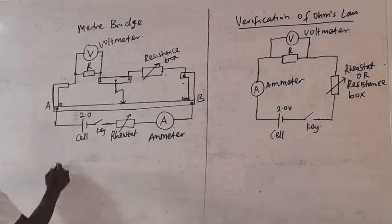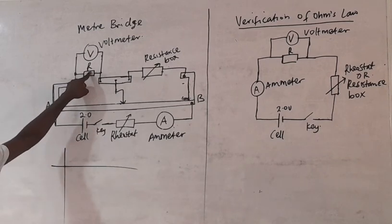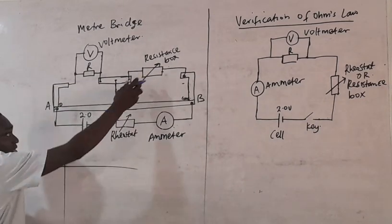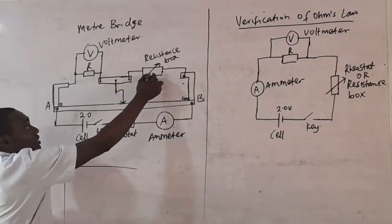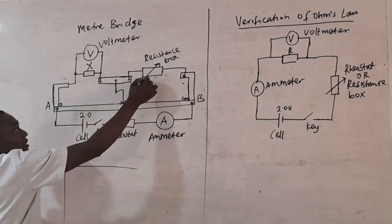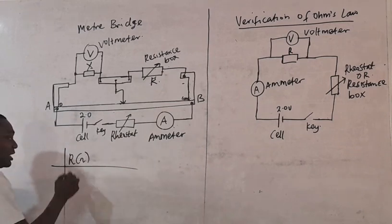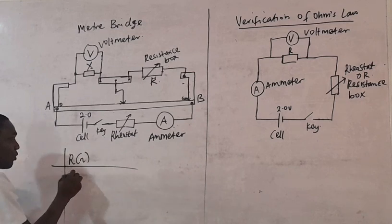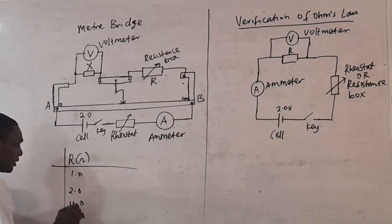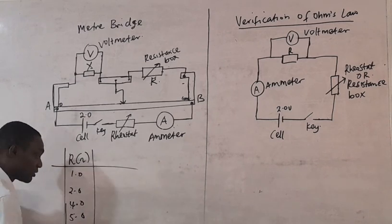Now when they ask you to vary — you do not know this resistor because it may be sealed. So they may ask you to change the value of the resistance. This may be called R, or maybe any other letter — it may be called X. You may be asked to set R to any value: 1.0 ohm, 2.0 ohm, 4.0 ohm, 5.0 ohm, 6.0 ohm, maybe 10.0 ohm. These are specific values.